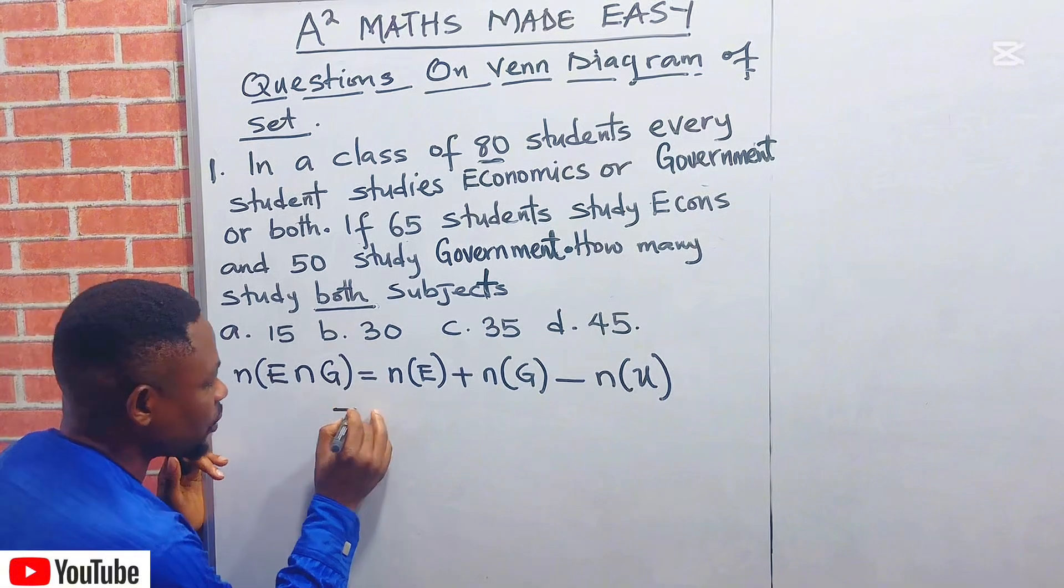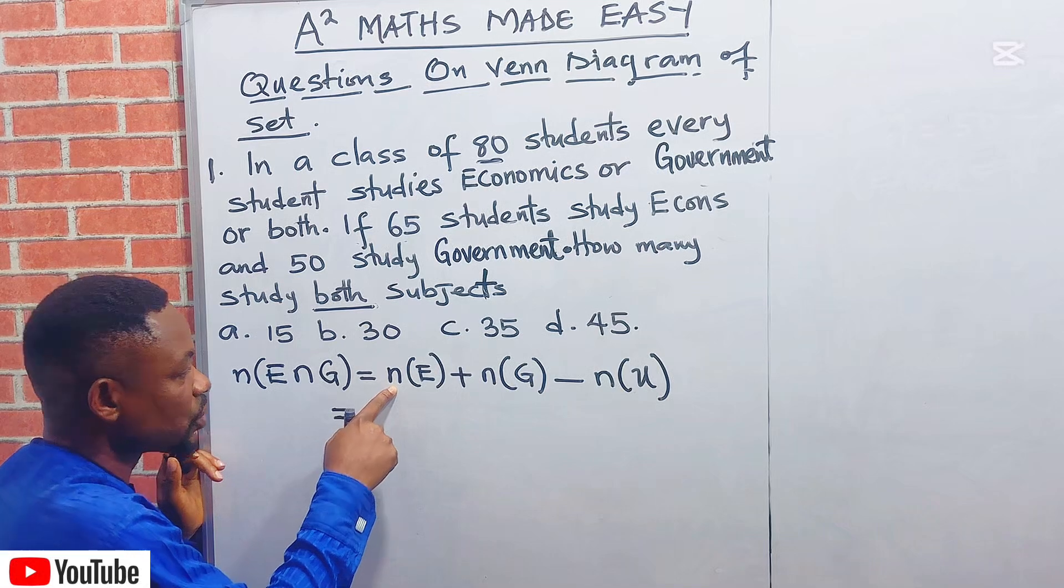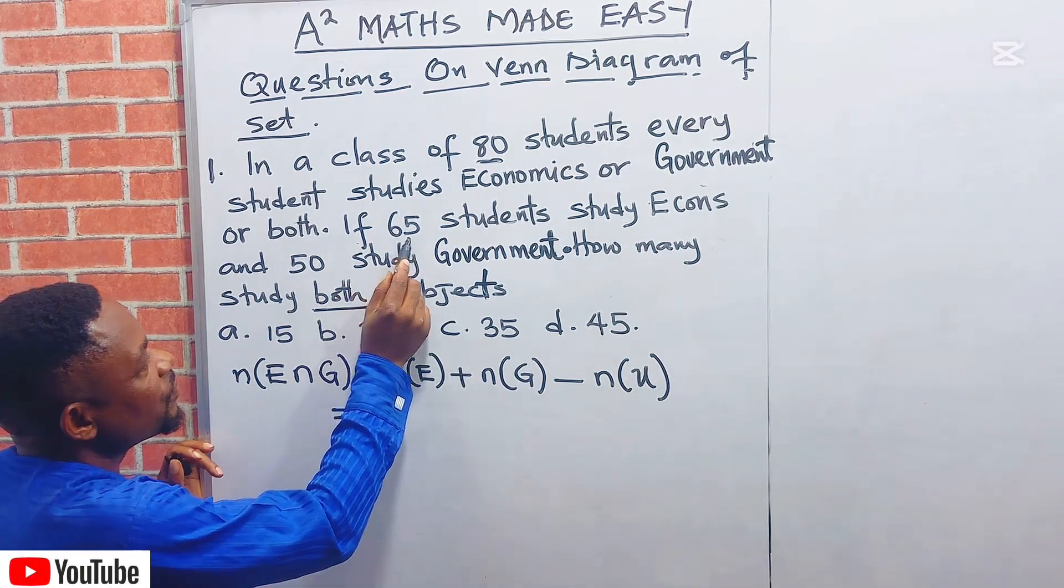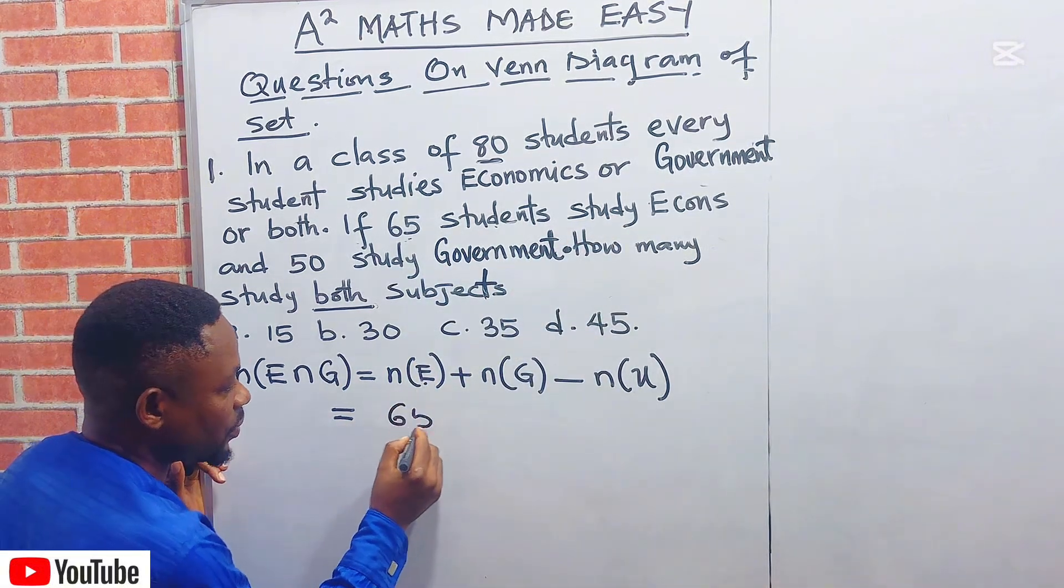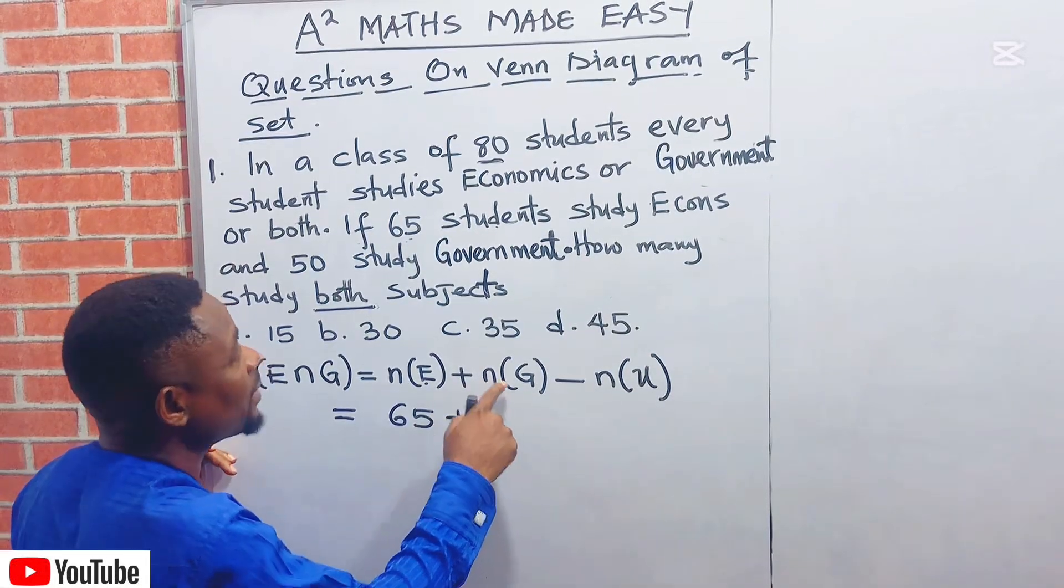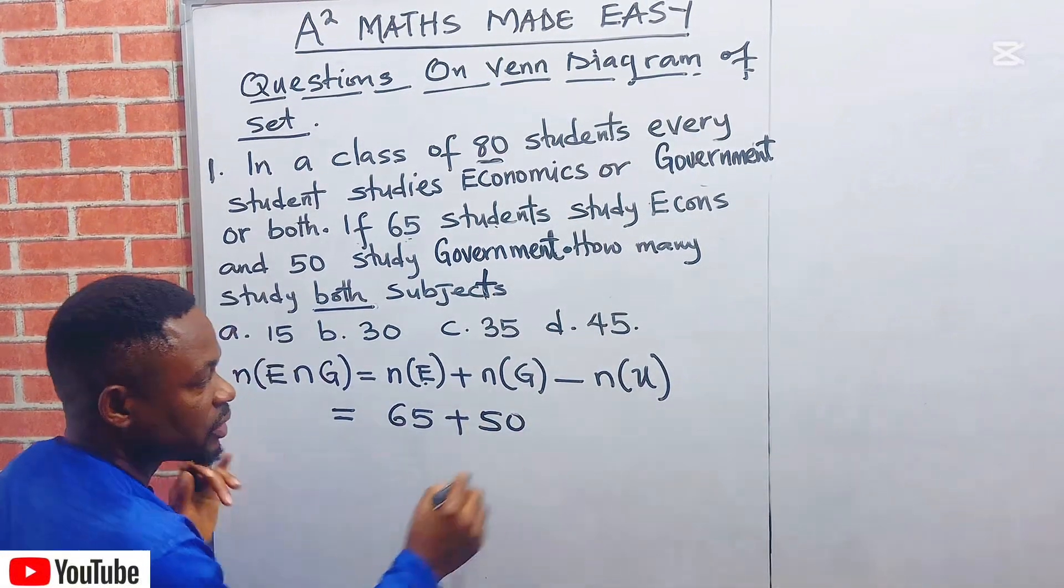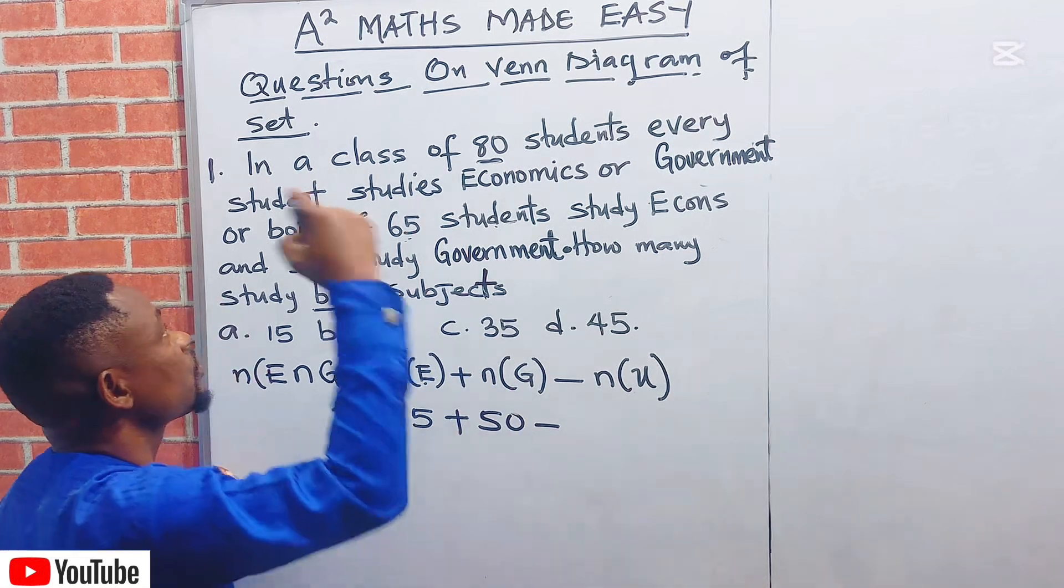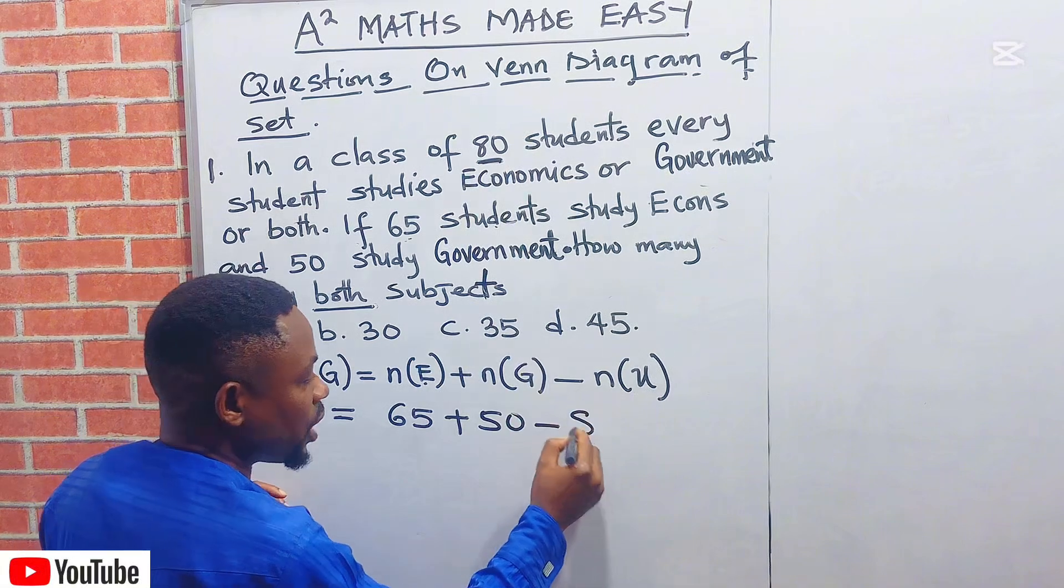The next thing is to fix those things one after the other. First, we know how many study Economics. From the question, 65 students study Economics. I'll now put here 65. Then plus. It was also observed that the number that study Government is 50. Then minus the universal set. The universal set is the first one there: in a class of 80 students. So I will now put here 80.